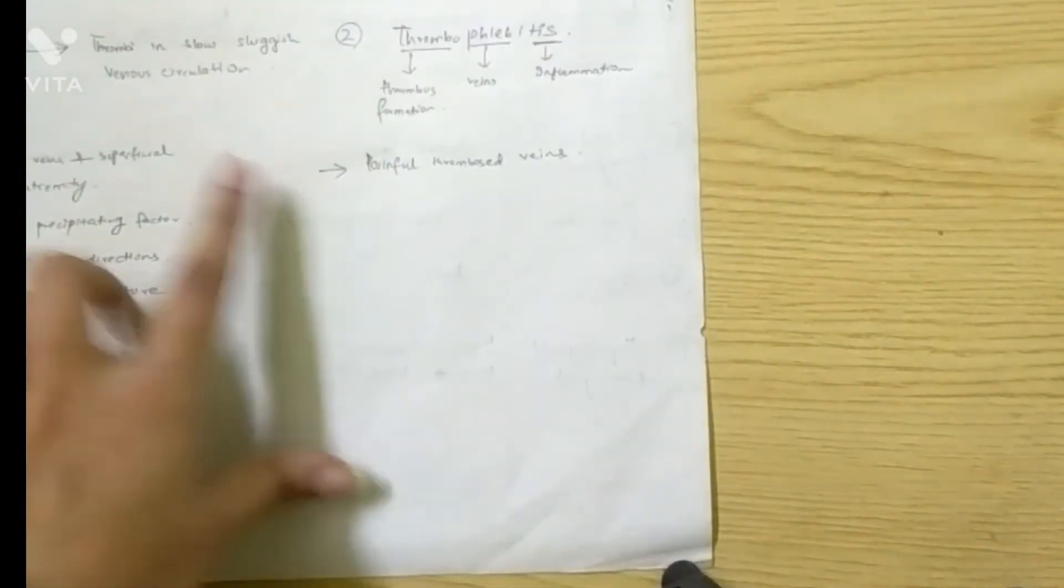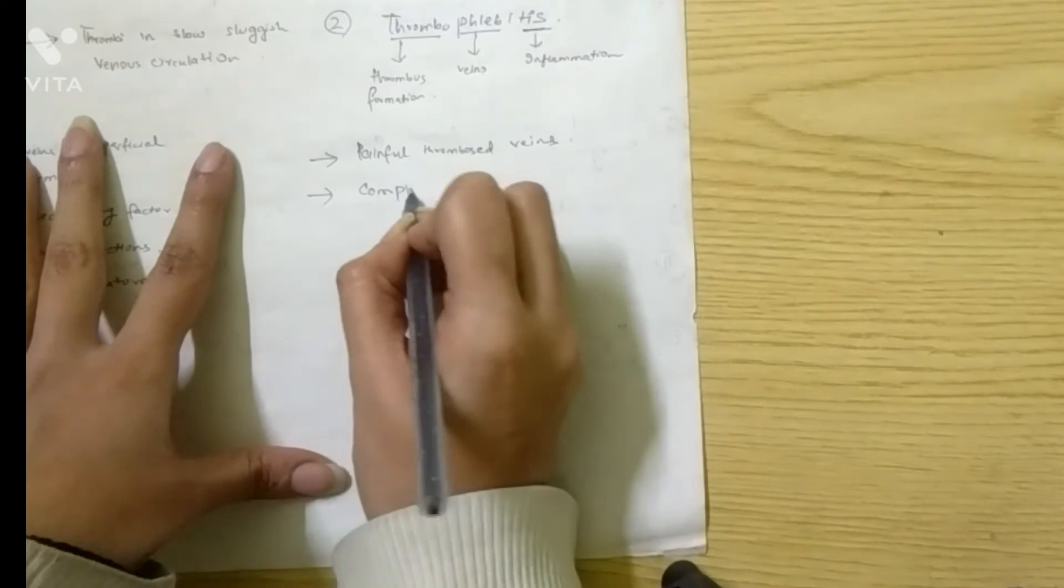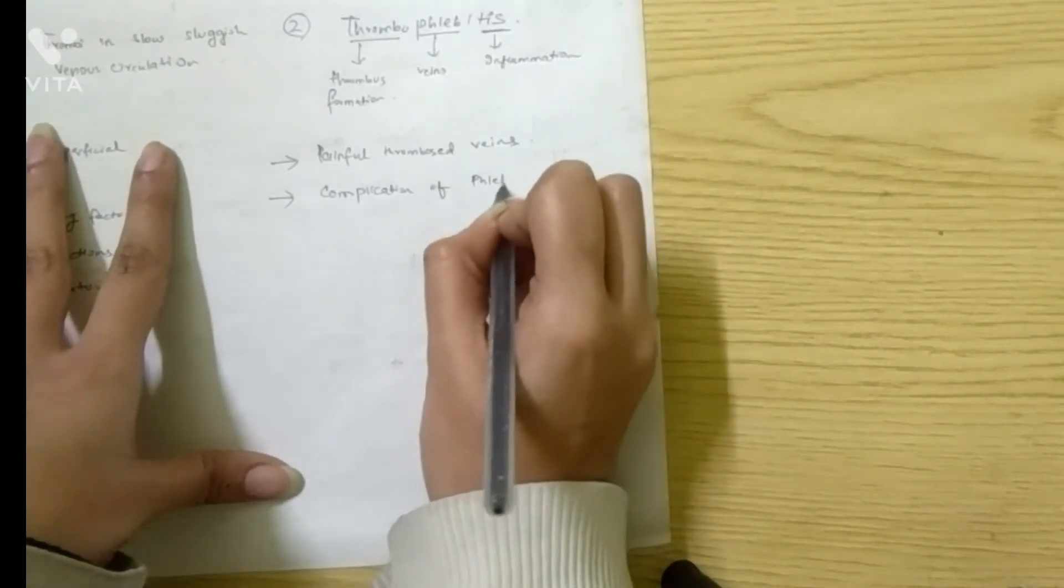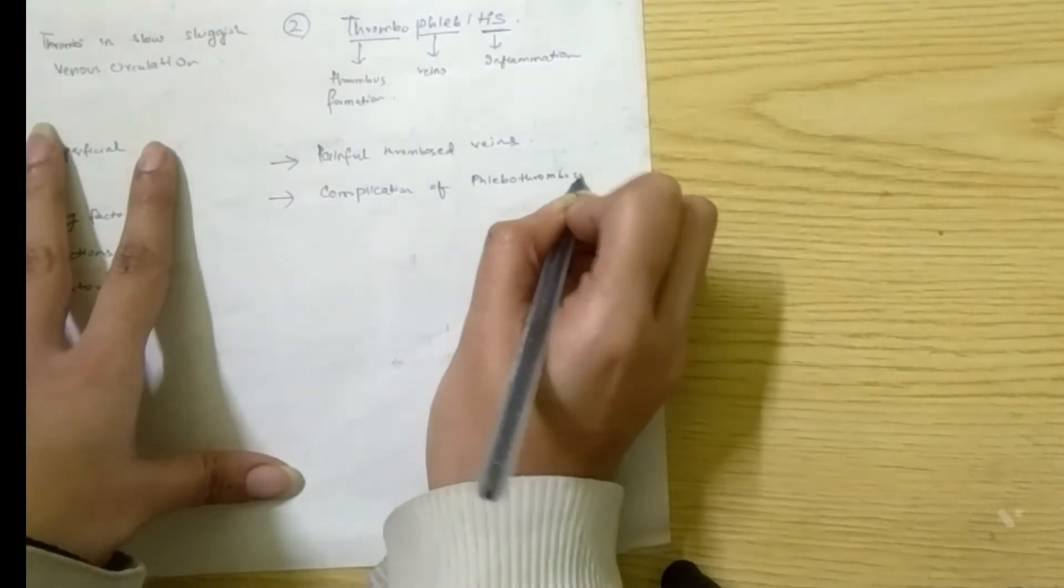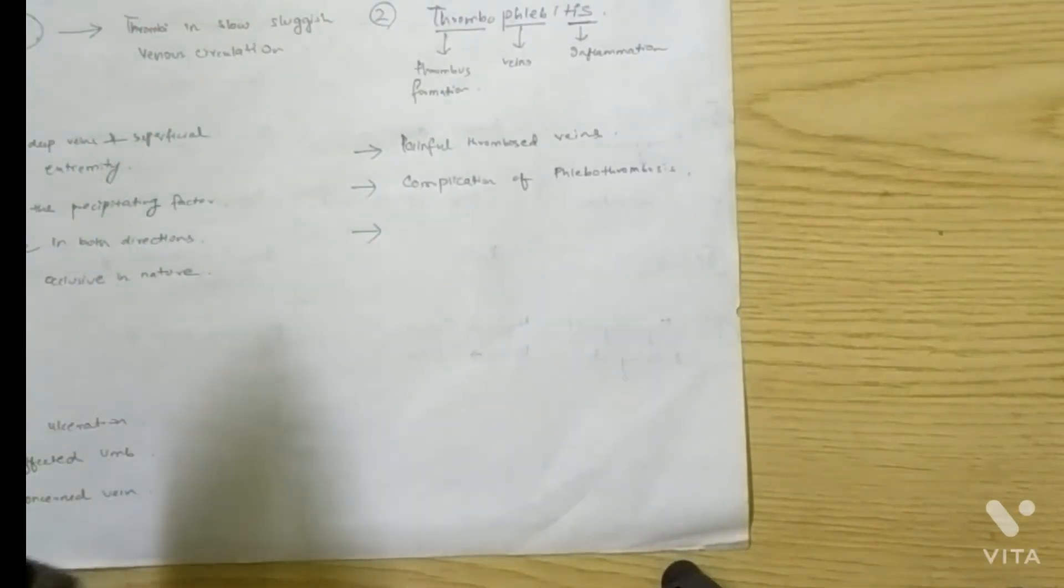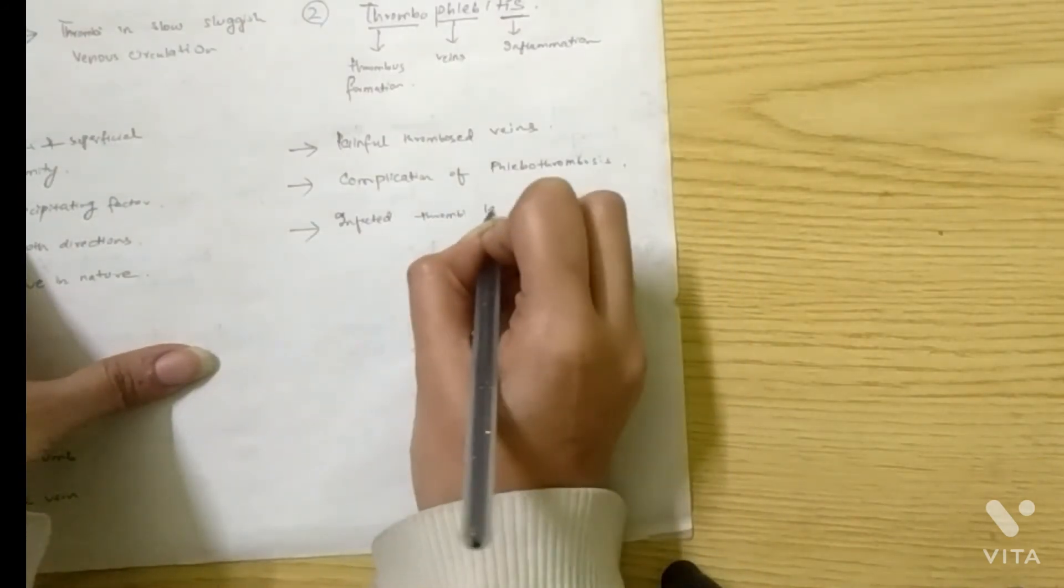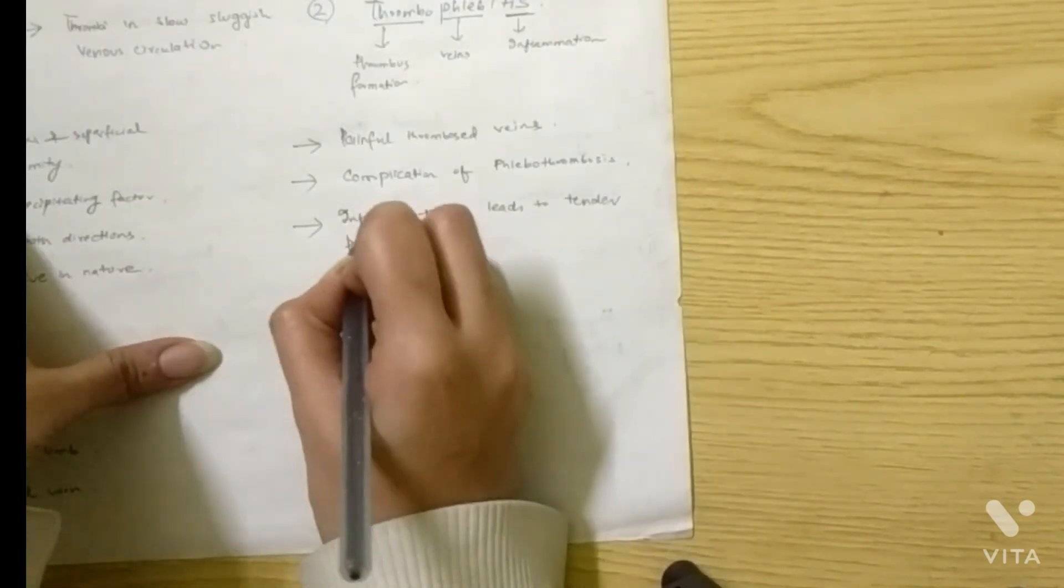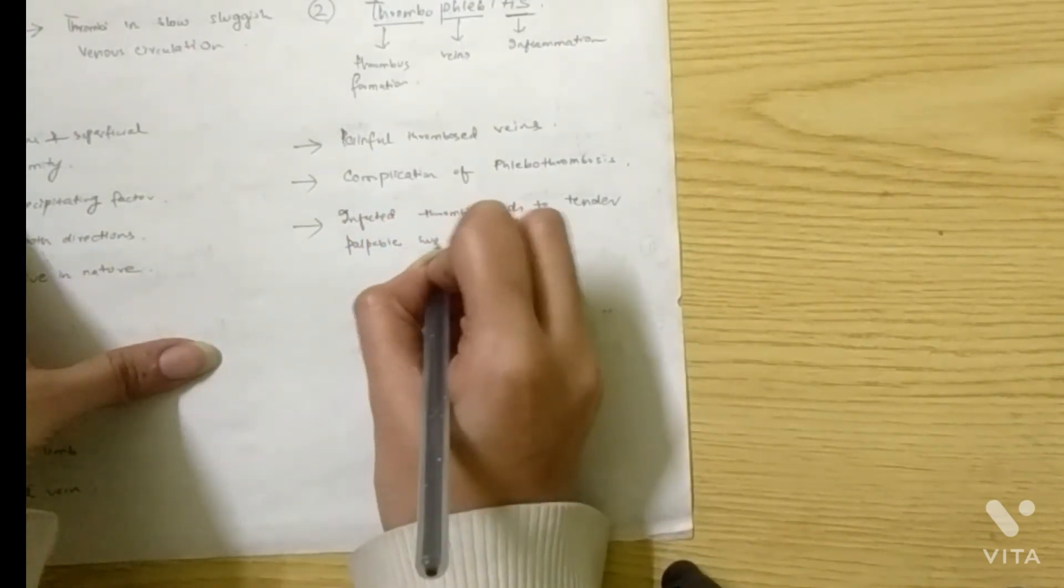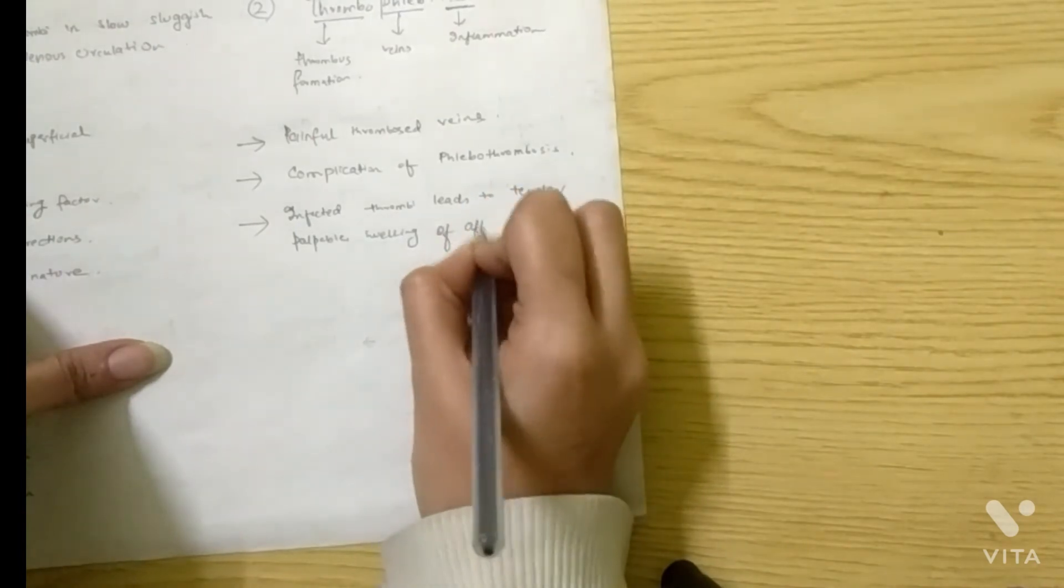Second, as already discussed, it is a complication of phlebothrombosis. Third, if that thrombi gets infected, then it will lead to tender palpable swelling of the affected vein. So infected thrombi leads to tender palpable swelling of affected vein.